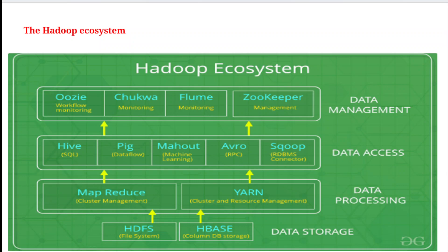Today I am going to explain the Apache Hadoop ecosystem — what it is and what components are inside it. If you look at the entire Hadoop ecosystem from the bottom, we have the basic and important components: HDFS and HBase. There are four main areas: data storage, data processing, data access, and data management.